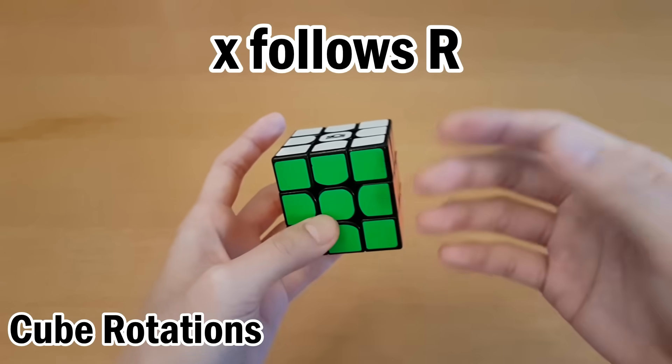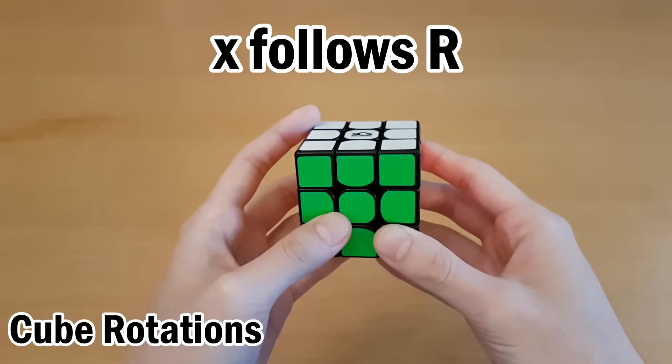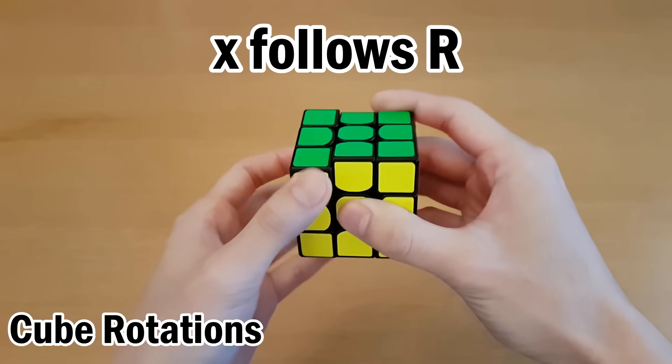x, y, and z are cube rotations. You can think of x as rotating the whole cube in the same direction as R. So if you see x, R goes this way, so x would go this way.